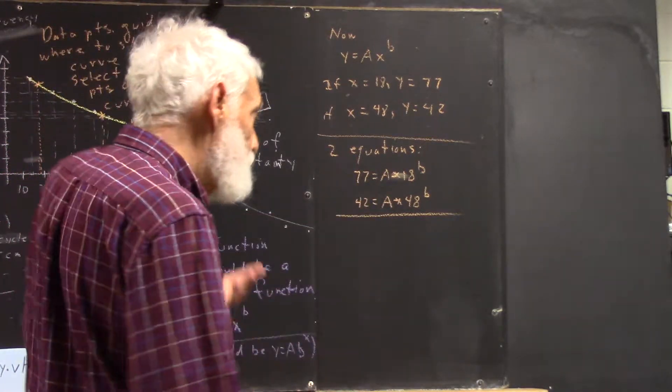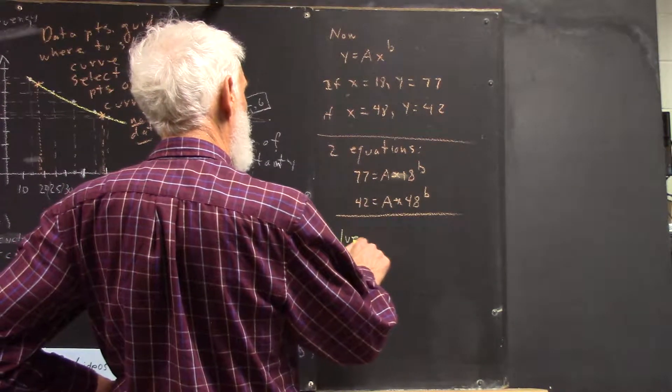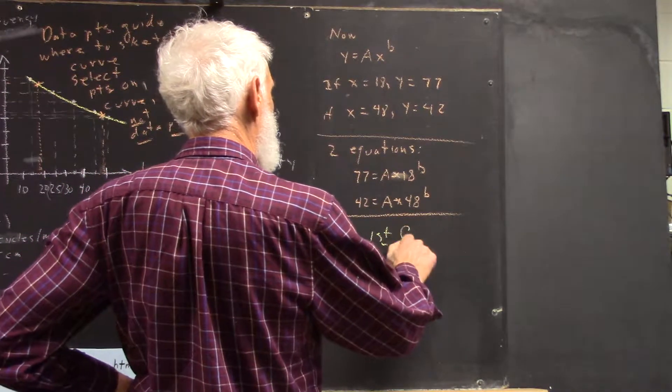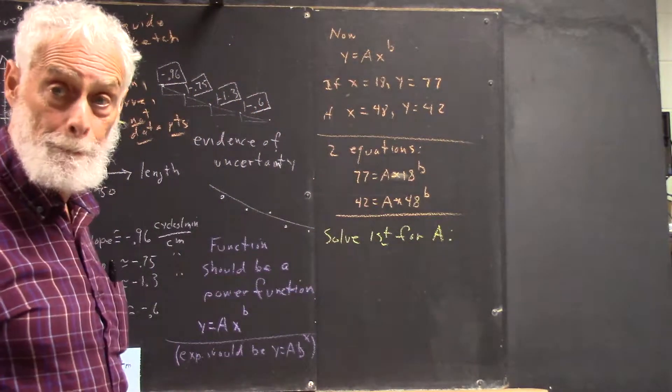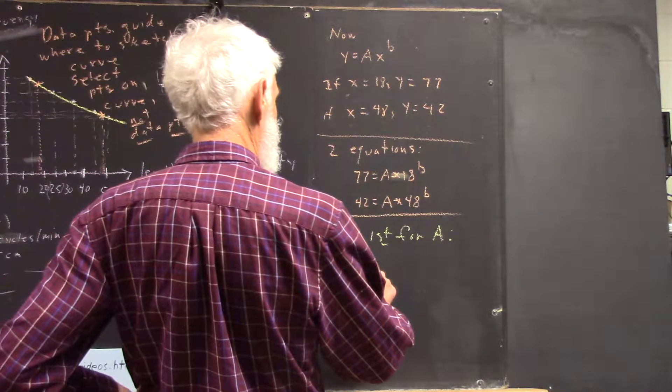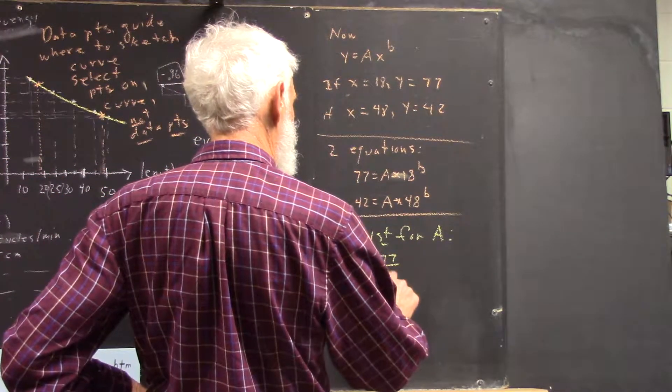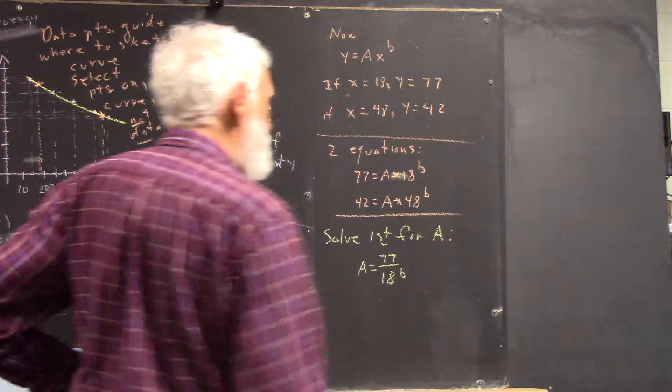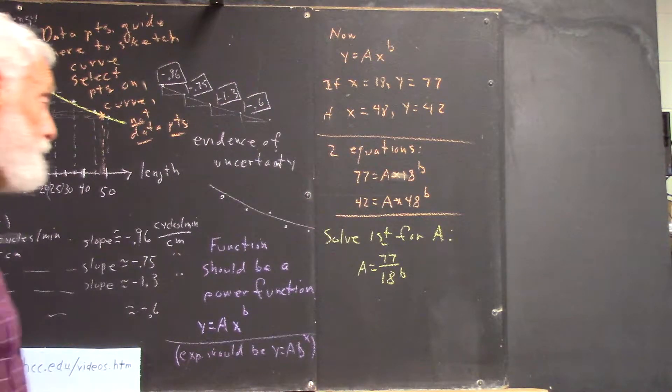In this case, as we've seen... Oh, now I see. Now I see. What was just said is we saw the first one for A. I was thinking 18 times B instead of 18. Okay? Well, we got... Got you, man. 77 over 18 to the B, right?